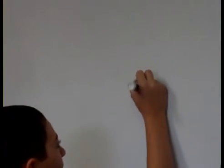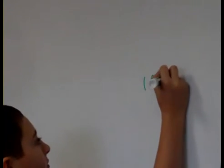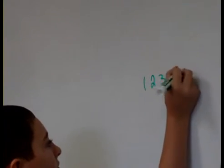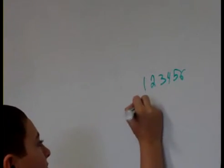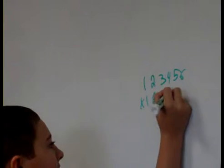So, you do 1, 2, 3, 4, 5, 6 times 1, 2, 3, 4, 5, 6.